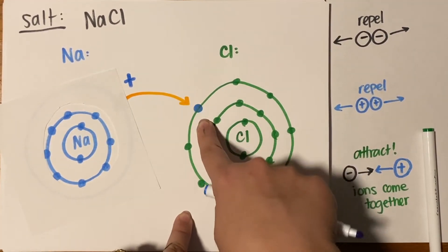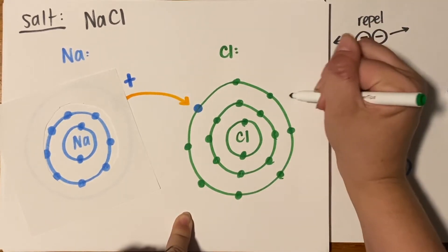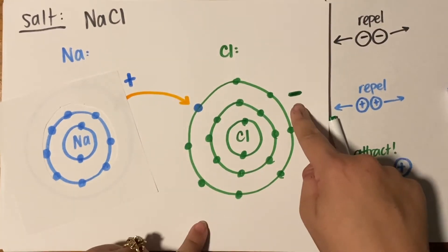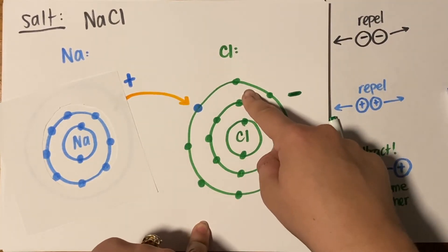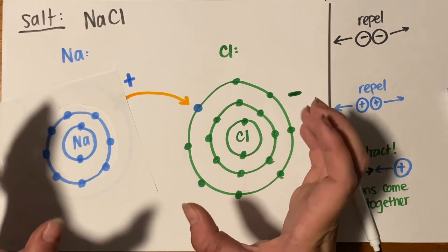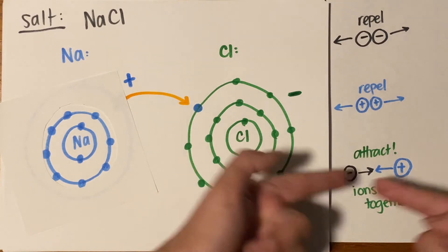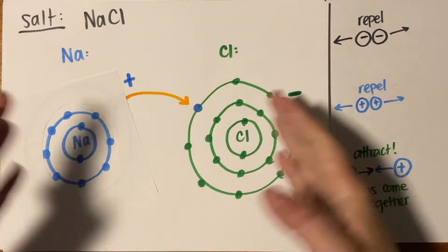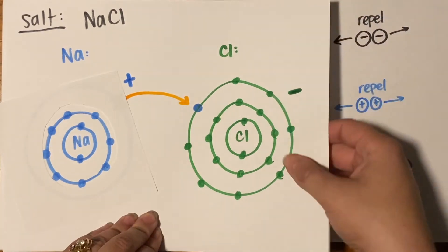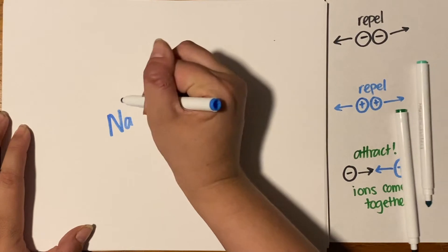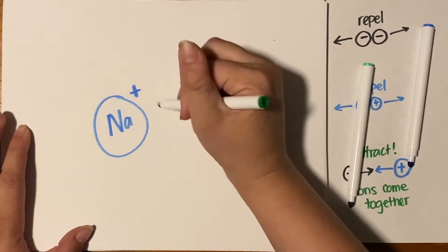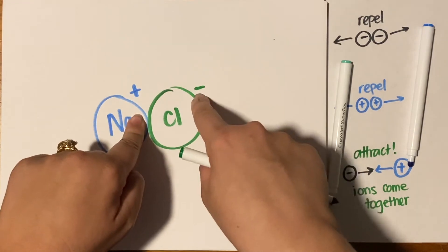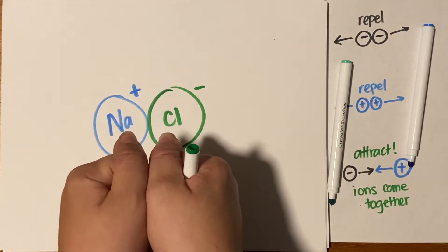Chlorine gained an electron, so it's going to have a minus-one charge. Your sodium ion — your positively charged cation — is going to be attracted to the negatively charged chloride ion. So I have my cation and my anion attracted to each other, right next to each other because of that attraction. Positive and negative attracted to each other — this is what salt looks like.